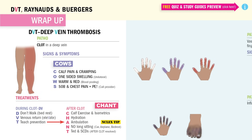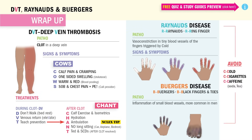Last but not least: Buerger's disease is known for its cold feet — remember B for bare feet. And R for Raynaud's disease — think cold fingers, so think R for ring fingers.